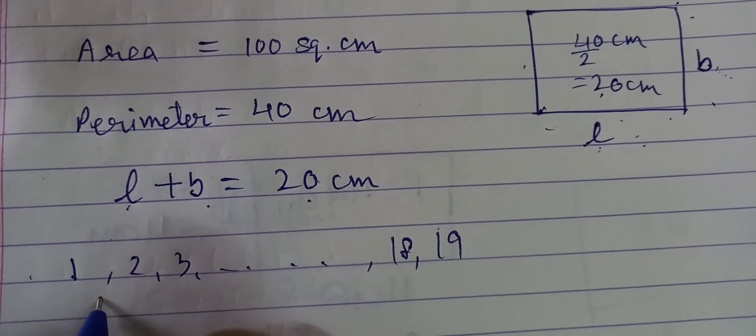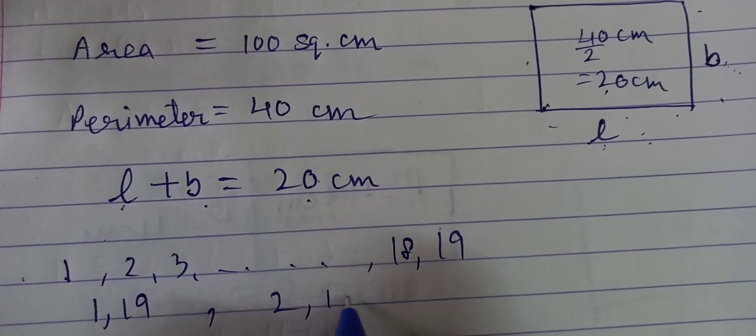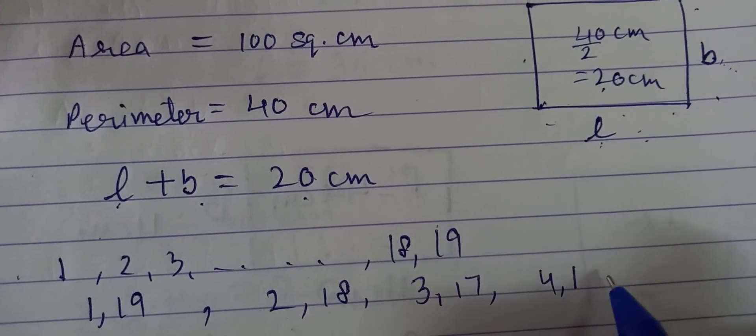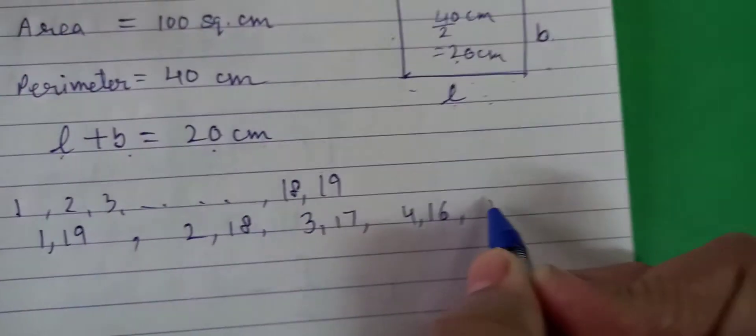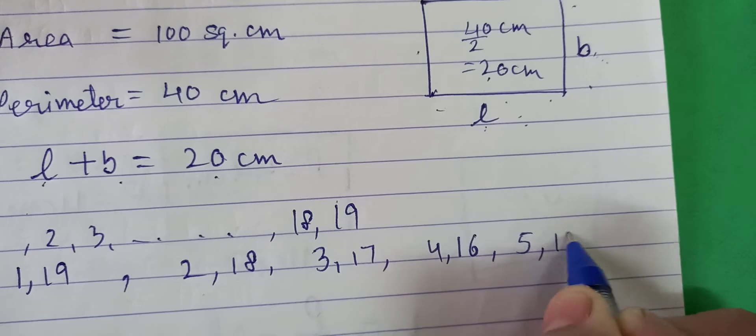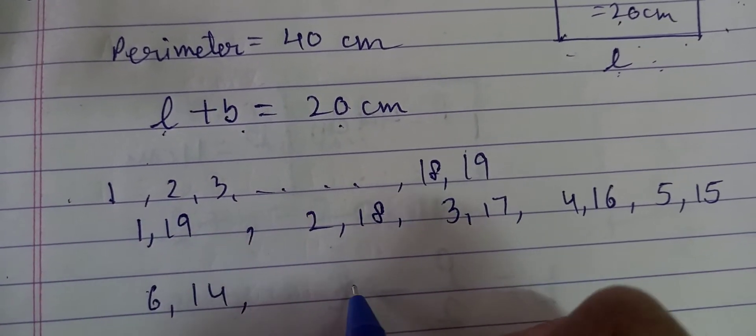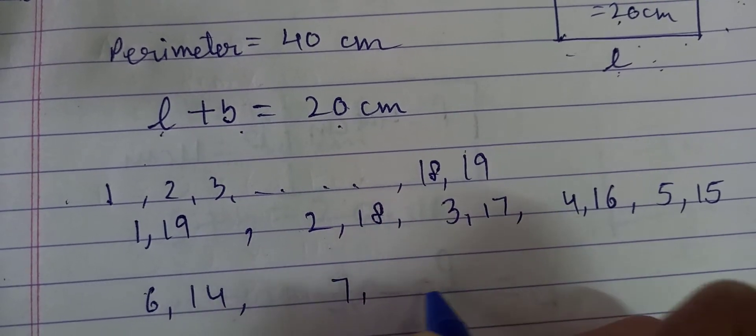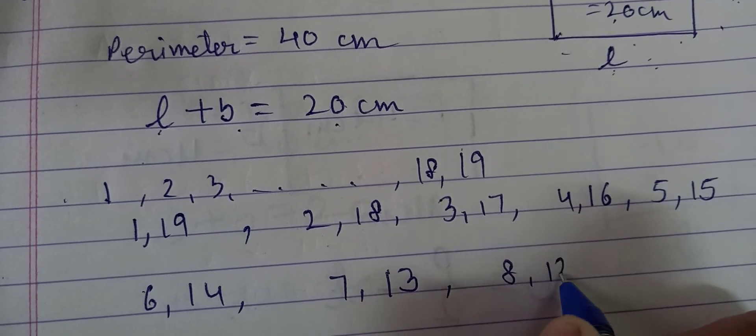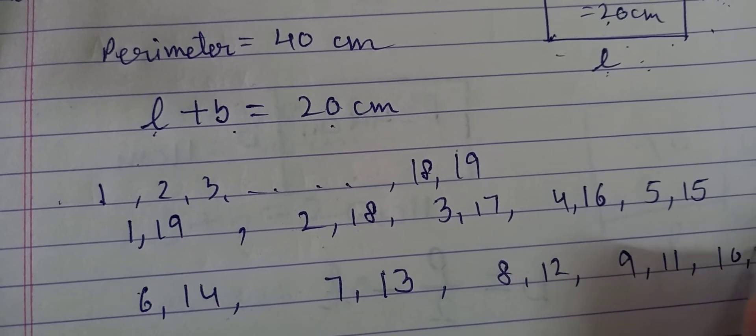तो जब हम ये पूरा find out करते हैं, तो इसमें हमारे pairs क्या बने हैं? 1 and 19, या फिर 2 and 18, या फिर 3 and 17, या फिर 4 and 16, 5 and 15, then 6 and 14, then 7 and 13, then 8 and 12, और 9 and 11, और 10 and 10.